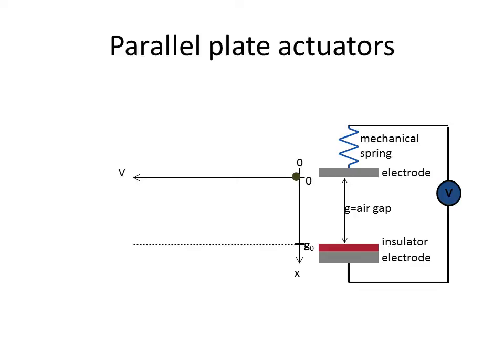You can also see that I have put an insulator layer on one of the two electrodes and this is necessary because otherwise if there's no insulator and the electrode closes you get a short circuit.